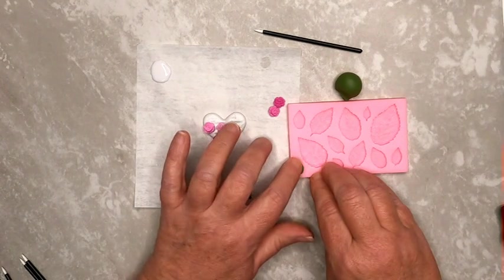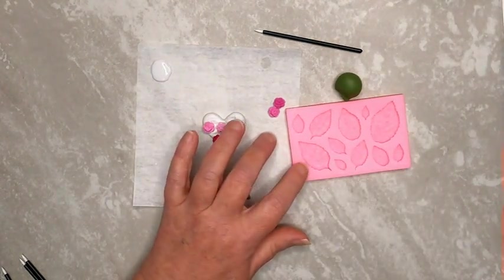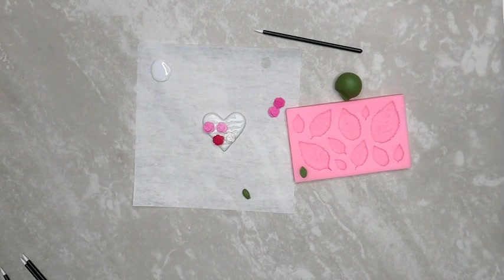Once you've placed your roses, use the green clay to mold some leaves. I used Primo Olive Green, and I used the smallest leaf from the Leaf Mold Earrings Kit. You'll need five or six leaves.